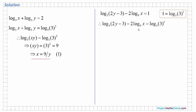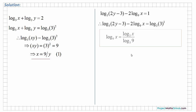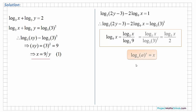One of the terms on the left hand side is to the base 9, so we need to convert this to the base of 3. We use the change of base law from page 21. We write down the new base required — log of x to the base 3 — and divide by the log of the original base. Since 9 is 3 squared, the log of 3 squared to the base of 3 is 2. So log of x to the base 9 equals log of x to the base 3 divided by 2.